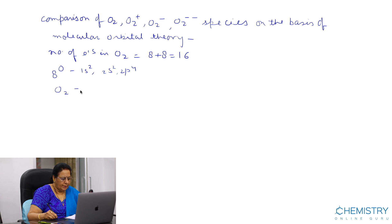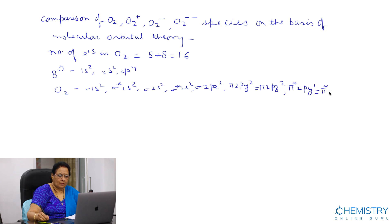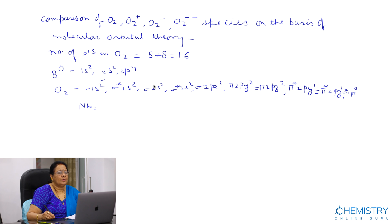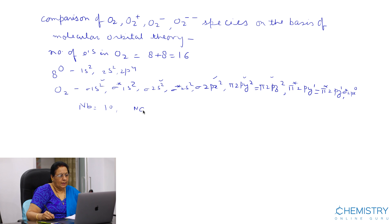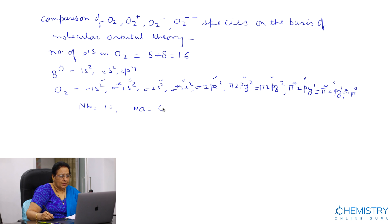The configuration of the O2 molecule according to Molecular Orbital Theory gives us bonding and anti-bonding electrons. The bonding electrons include those in sigma and pi bonding orbitals. The number of bonding electrons Nb equals 10. The anti-bonding electrons Na are those in the star orbitals, giving a total of 6 anti-bonding electrons. We can calculate bond order using the formula: bond order = (Nb - Na) / 2.